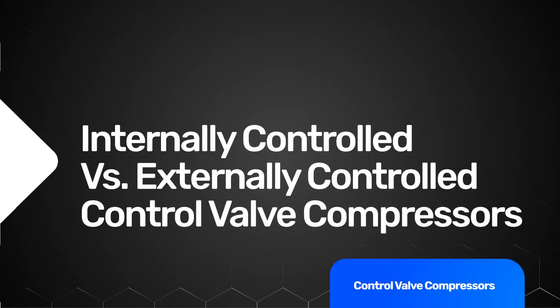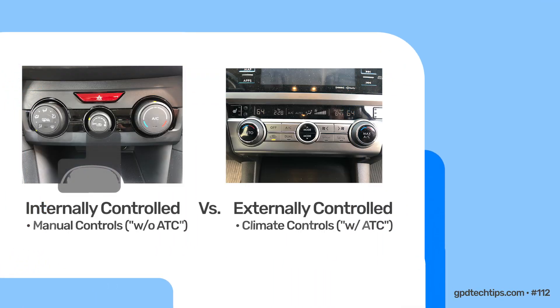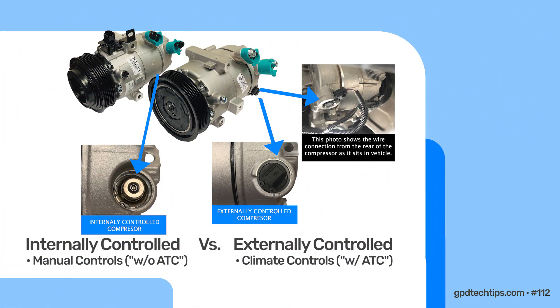Control valve compressors can also be categorized as internally controlled or externally controlled. You may see both options when ordering a compressor. An easy way to distinguish these categories is to identify if the vehicle has manual or automatic controls, and to look at the way the compressor is installed in the vehicle. Generally, if the vehicle has manual controls, it will feature an internally controlled compressor.